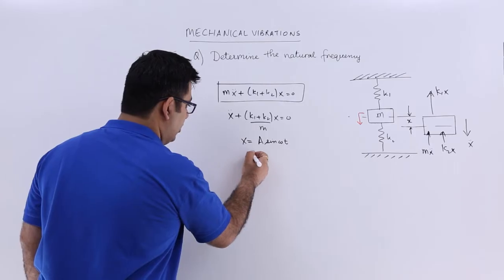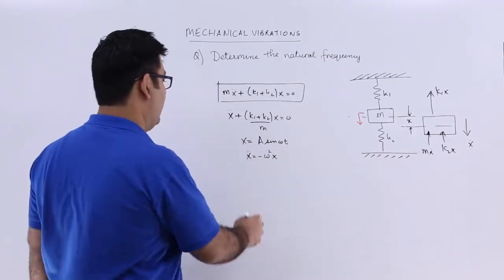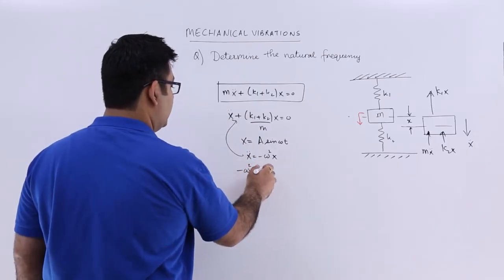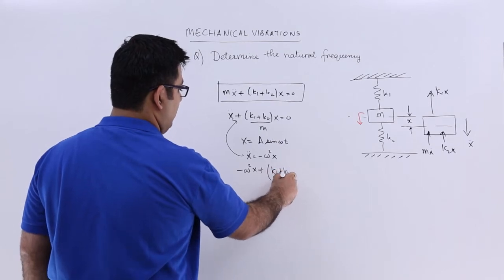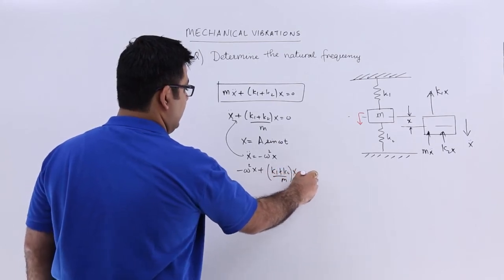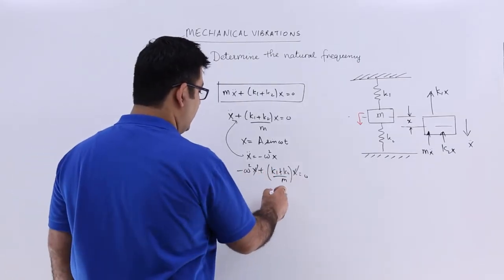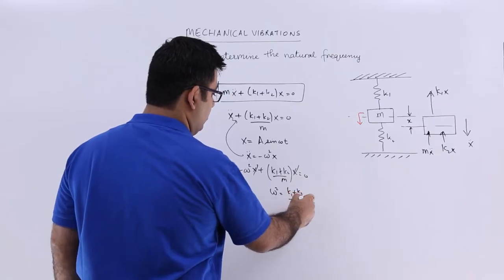So I will put this over here and we will get minus omega square X plus K1 plus K2 upon M into X is equal to 0. So X can be cancelled off, so omega square would be K1 plus K2 upon M.